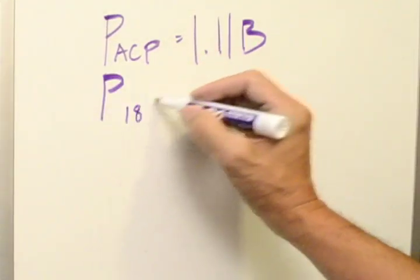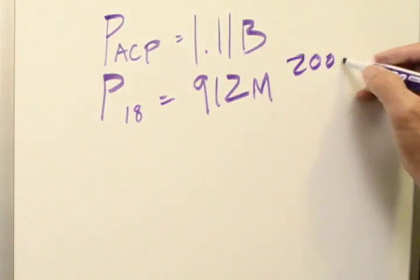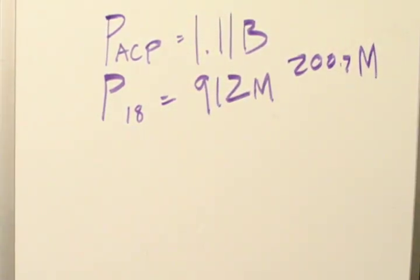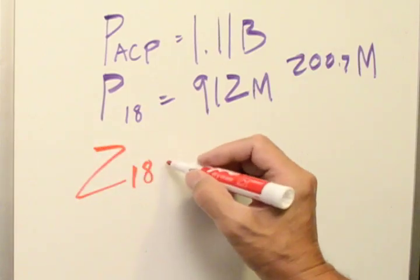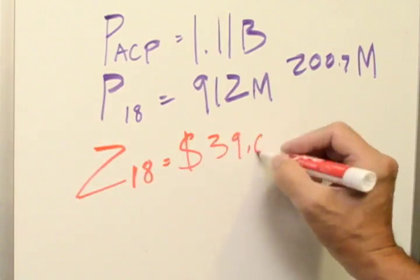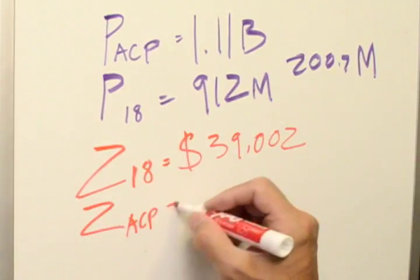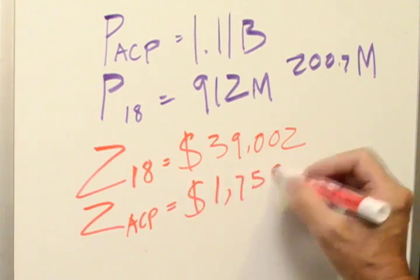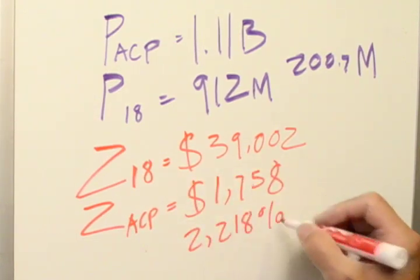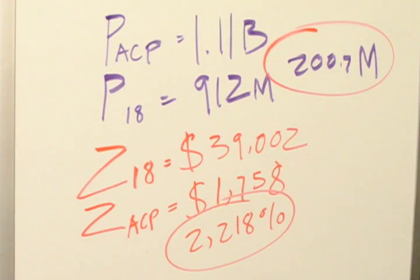Look at the difference in population. The ACP have 1.11 billion people, and the high 18 have 912 million, a sum difference of about 200 million. Yet, there is a 2,218% difference in how we account for our population in terms of GDP. In our global fight against climate change, equalization is not a lot to ask considering our colonial and post-colonial histories, especially when we're fighting for our survival.